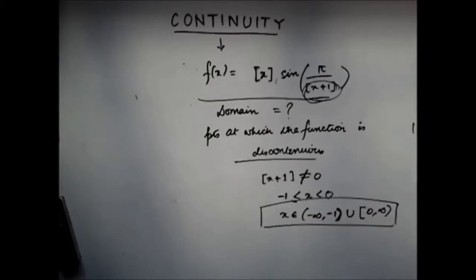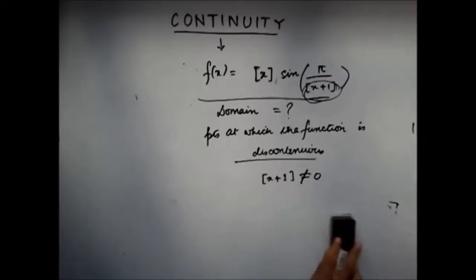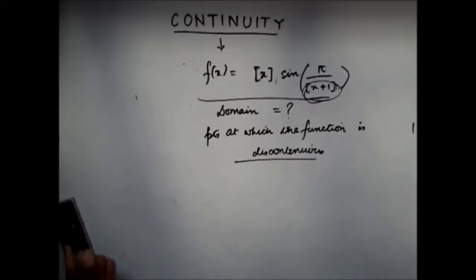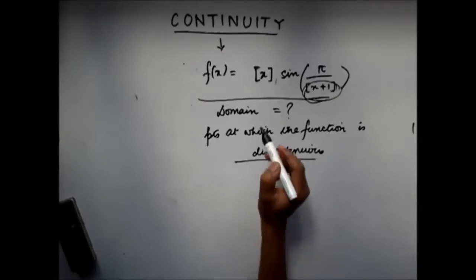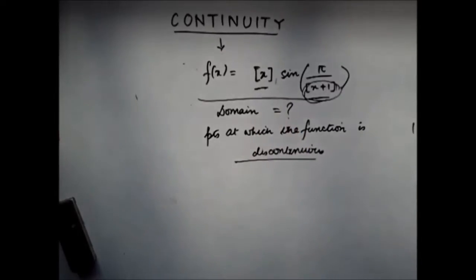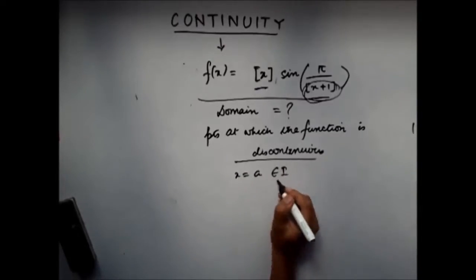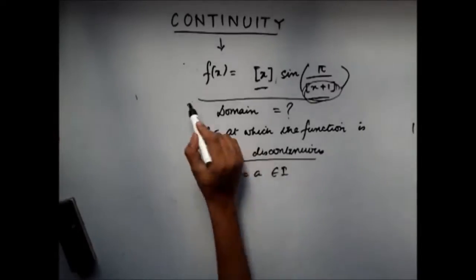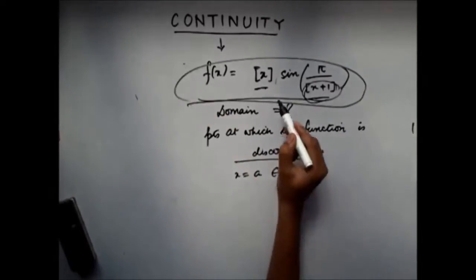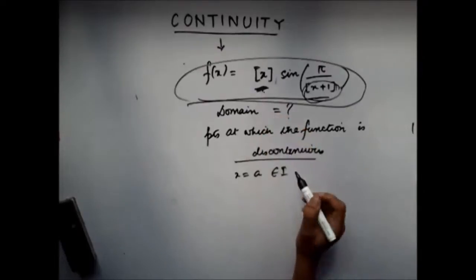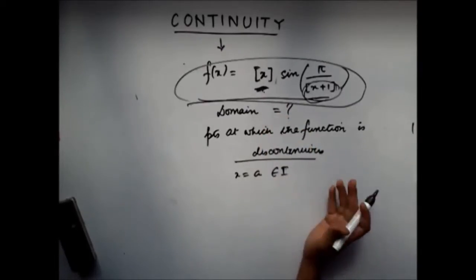Now I need to find the points at which the function is discontinuous. Obviously, the function has the greatest integer function in it, and you know that the greatest integer function is discontinuous at integral points. So all I need to do is check, for integer values of x, whether this whole function is continuous or not, because the greatest integer function gives problems only in the case of integers.